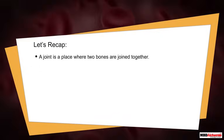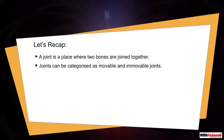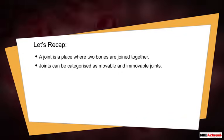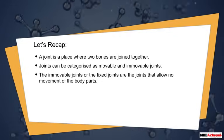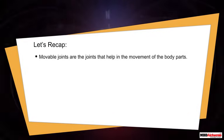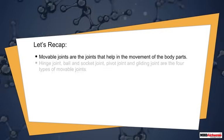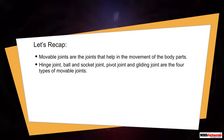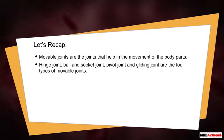Let's recap. A joint is a place where two bones are joined together. Joints can be categorized as movable and immovable joints. The immovable or fixed joints allow no movement of the body parts. Movable joints help in the movement of the body parts. Hinge joint, ball and socket joint, pivot joint, and gliding joint are the four types of movable joints.